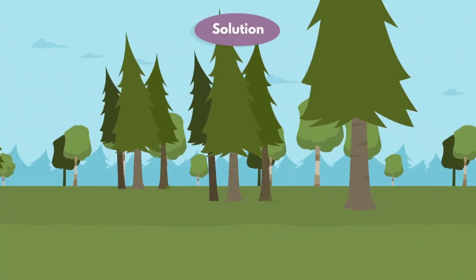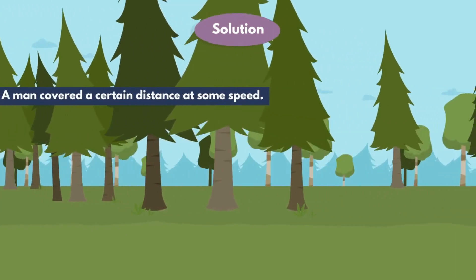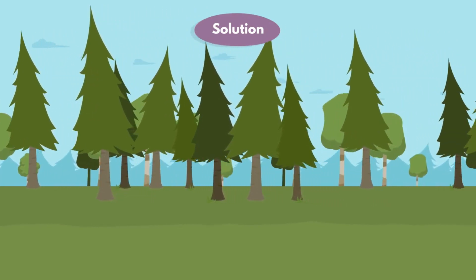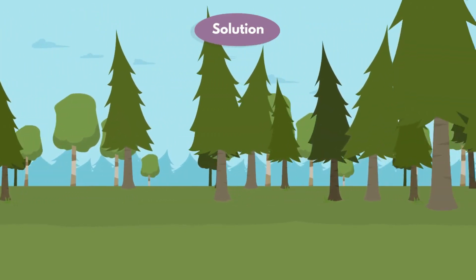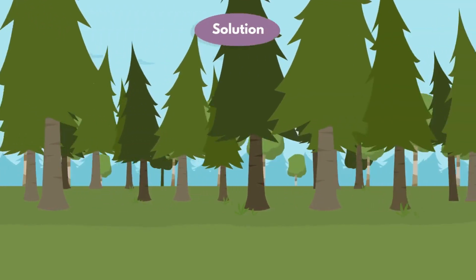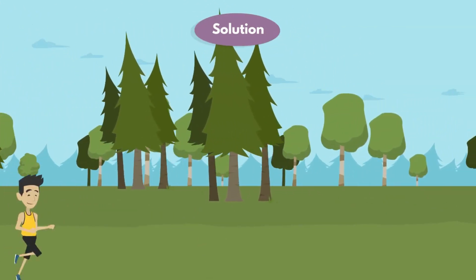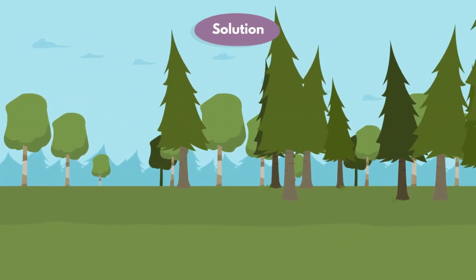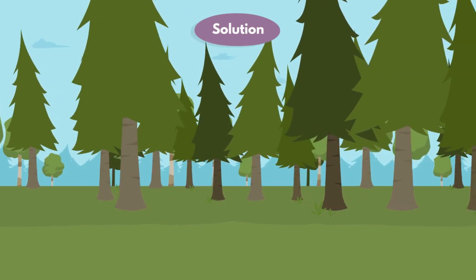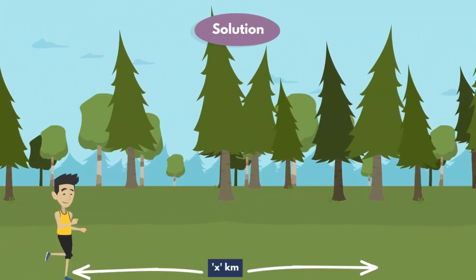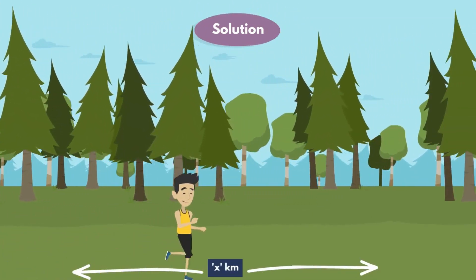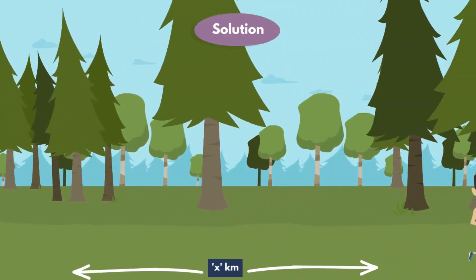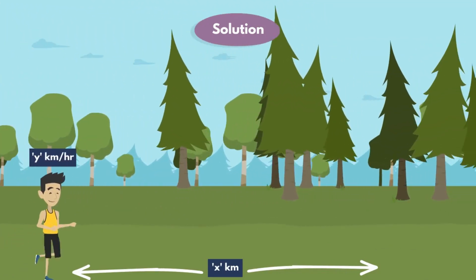Let's see the solution. In the statement they given that a man covered a certain distance at some speed. So here is a man, and he covered a certain distance at some speed. Let the distance be x kilometers, and the initial speed be y kilometers per hour.